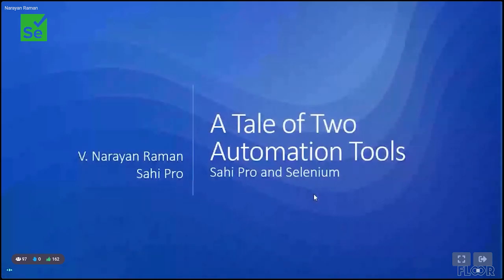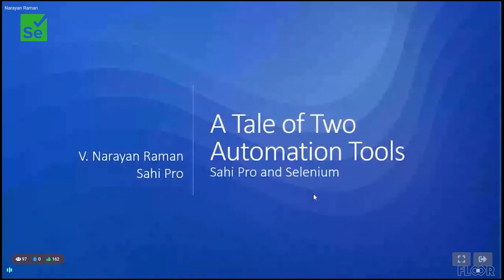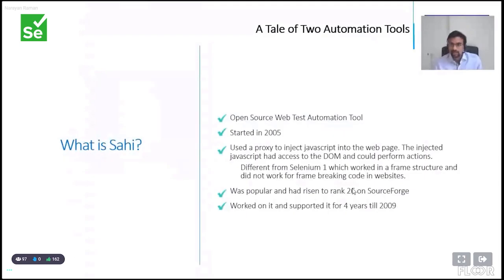This talk is about how the whole thing happened — the tale of two automation tools, Sahi Pro and Selenium. It's the evolution of Sahi and Sahi Pro and Selenium. Sahi is an open source web test automation tool. It started in 2005.